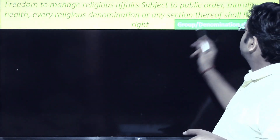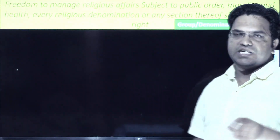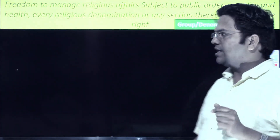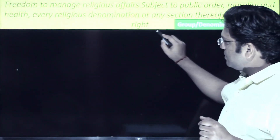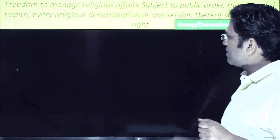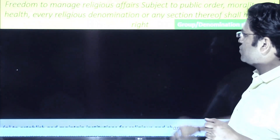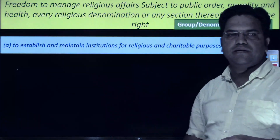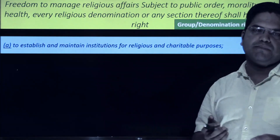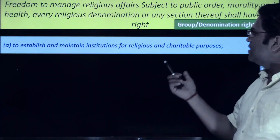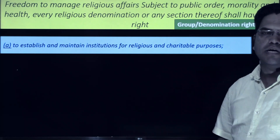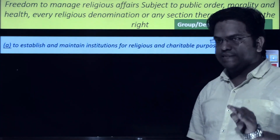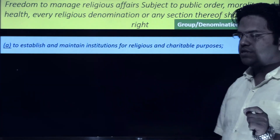While Article 25 extended rights at the individual level, Article 26 says every religious denomination or any section thereof shall have certain rights. Clause A reads: to establish and maintain institutions for religious and charitable purposes.